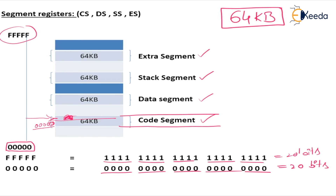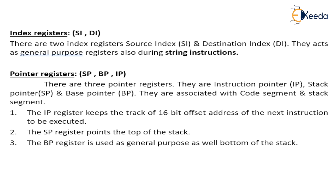Now coming to index registers. We have two index registers: SI (source index register) and DI (destination index register). They act as general-purpose registers and are also used for string instructions. SI and DI are also used as offset addresses within segment addresses.